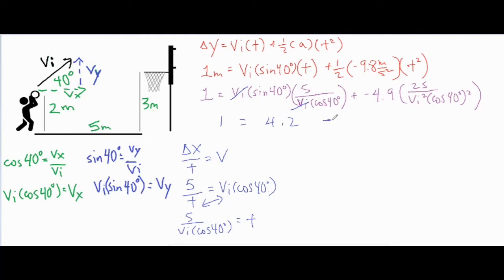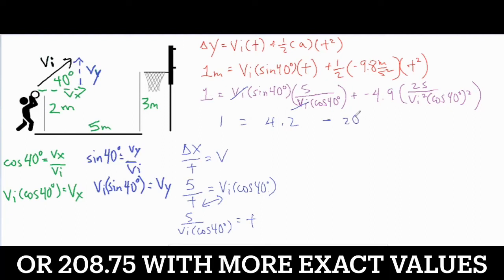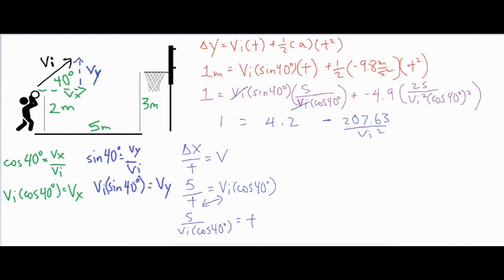For our second part, there's a minus sign because we have a negative. We can compute 4.9 times 25 divided by cosine of 40 squared, which gives us 207.63. The vi squared is still on the bottom as our unknown. So the expression simplified quite a bit: sine of 40 times 5 divided by cosine of 40 gave a single value of 4.2, and 4.9 times 25 divided by cosine squared of 40 gave 207.63, with vi squared on the bottom.